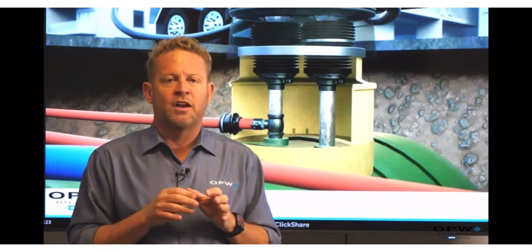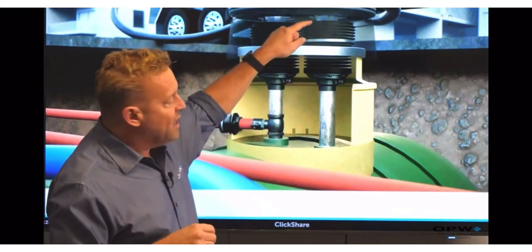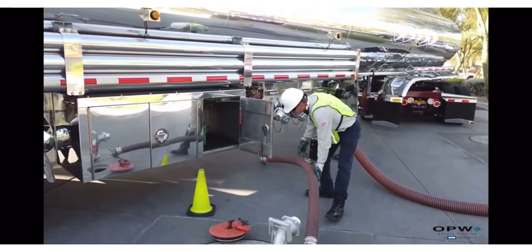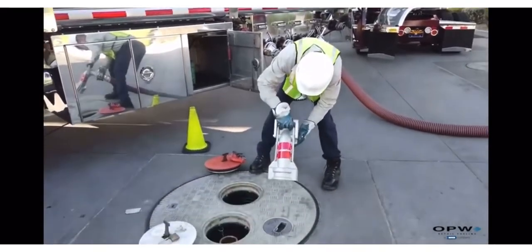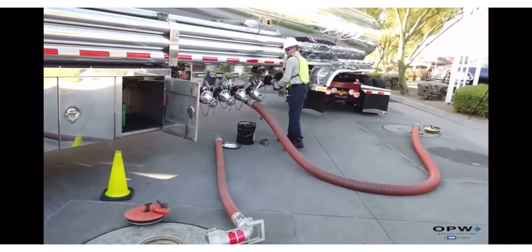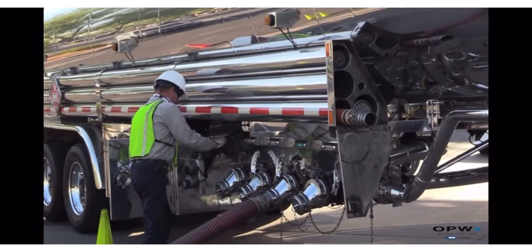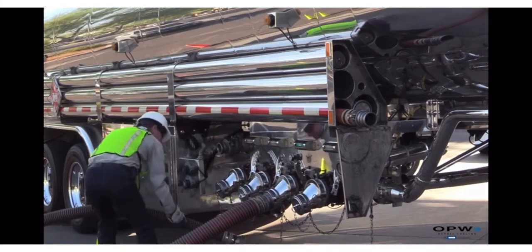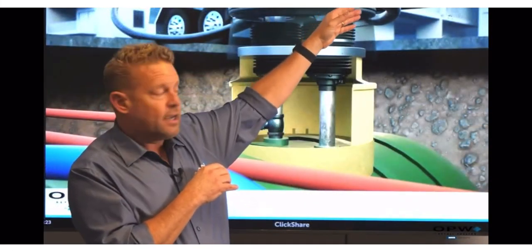What we came up with is what's referred to as stage one or phase one vapor recovery. So now what happens is as fuel is dropped into the tank, before the driver makes that drop he has another hose on his truck. It's referred to as a vapor recovery hose. It's usually orange. They try and separate the two. It's usually a bit smaller diameter, a vapor recovery hose usually three inch.